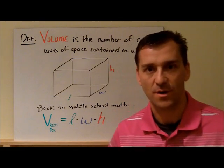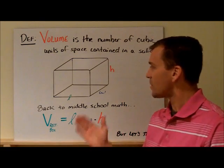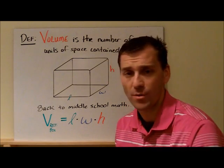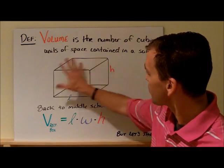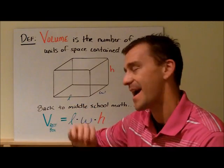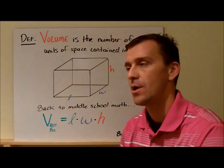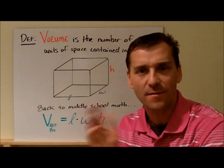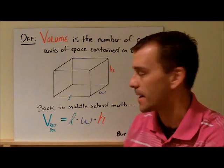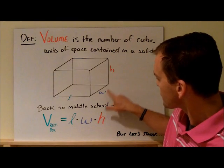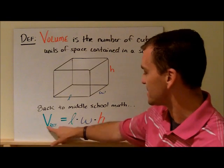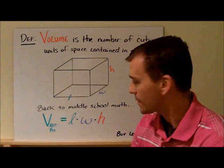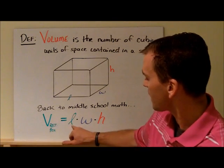Back to middle school: when you have a prism like this, you remember the volume is length times width times height. You take the length times width times the height, and that is exactly what it is. This is a postulate in your book for a rectangular box.